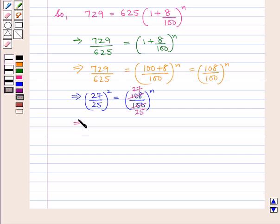So, (27 upon 25) raised to power 2 equals (27 upon 25) raised to power N. This implies N is equal to 2.